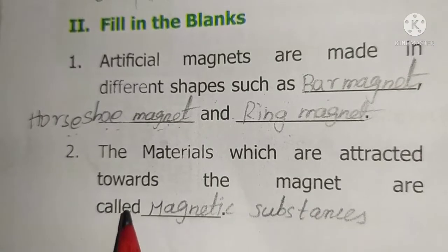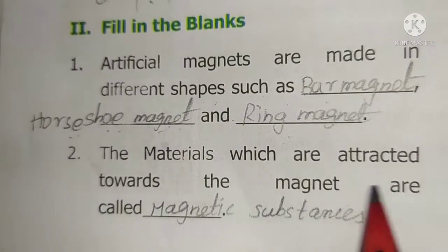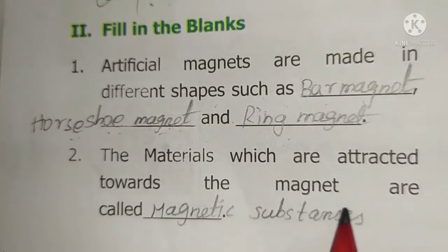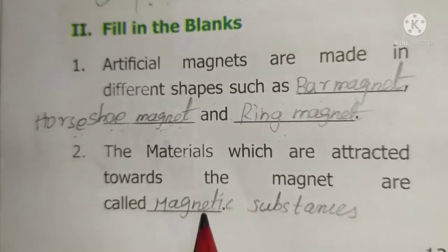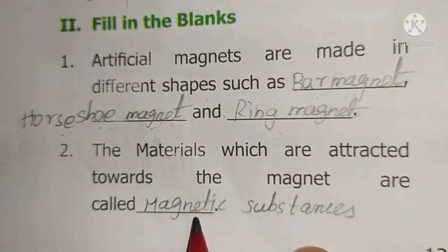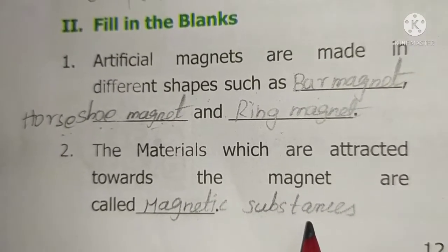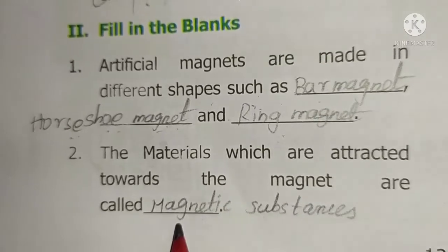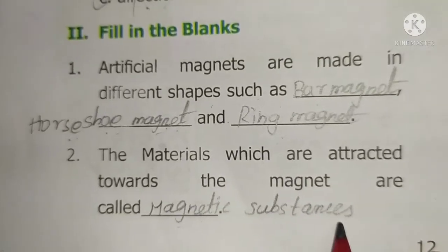The materials which are attracted towards the magnet are called magnetic substances. Note that — magnetic substances.